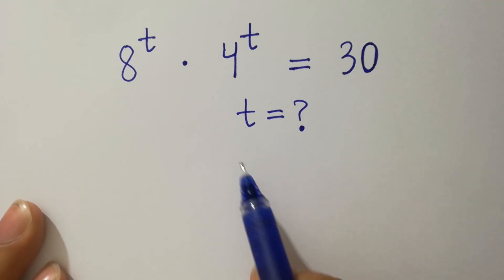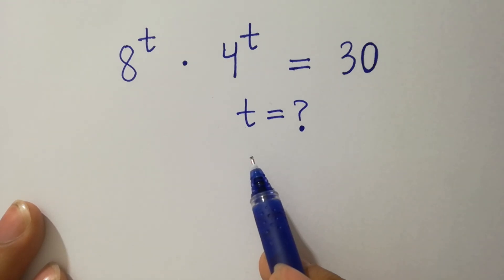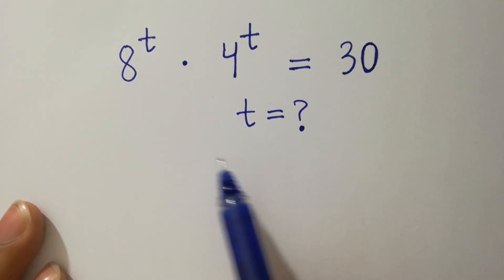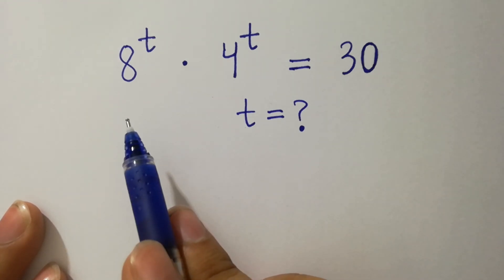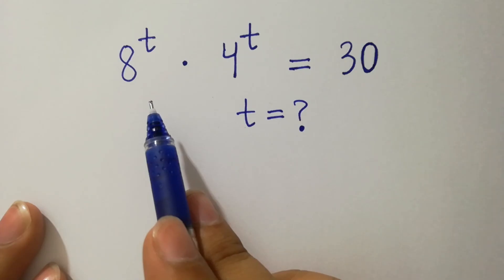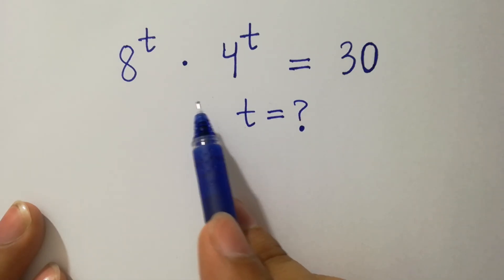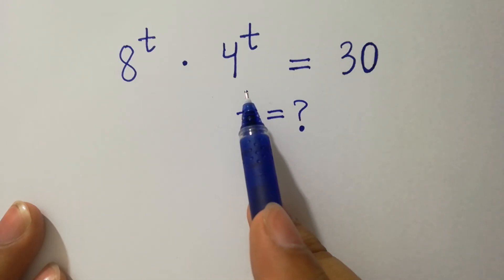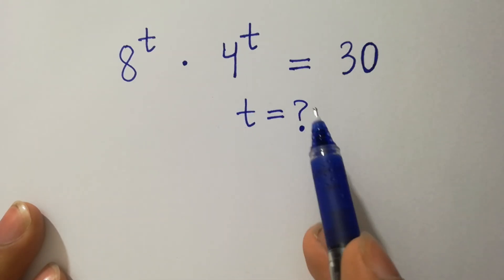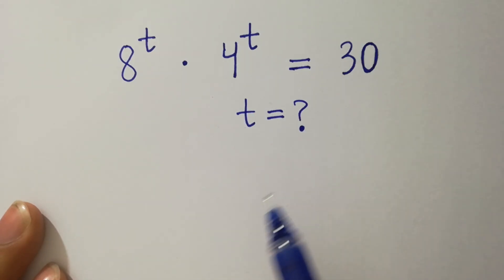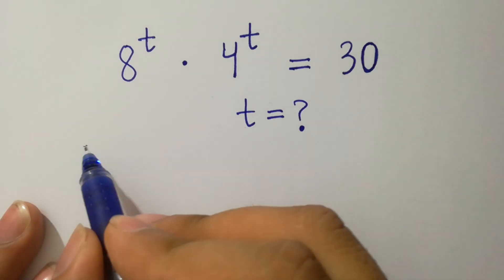Hello friends. Find the value of t if 8 to the power t times 4 to the power t equals 30. Let's have a solution.